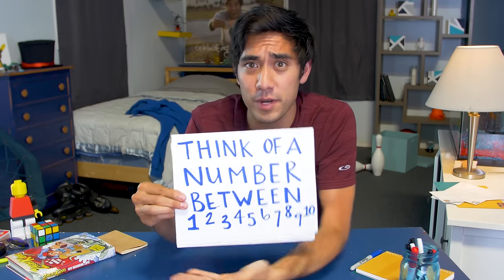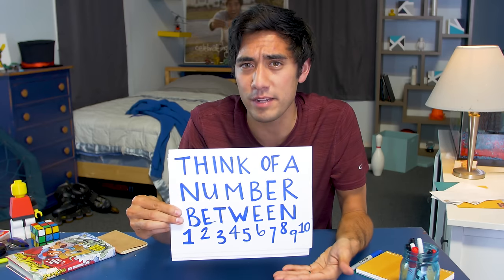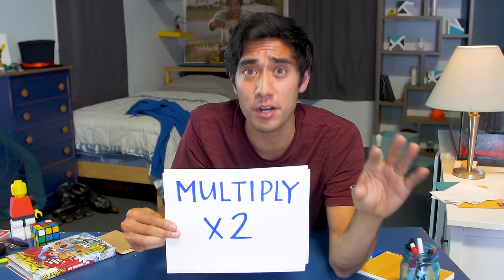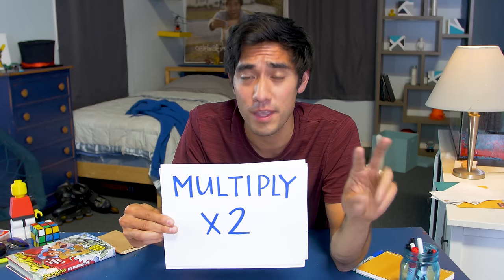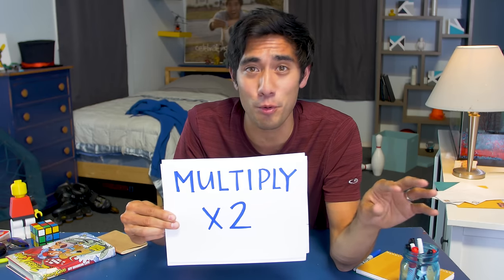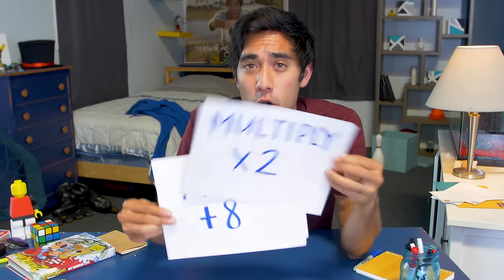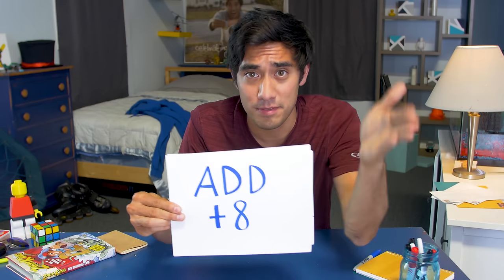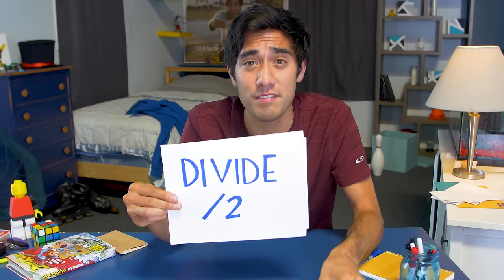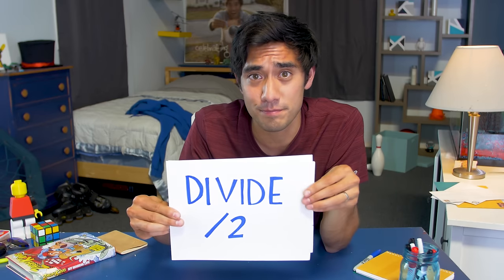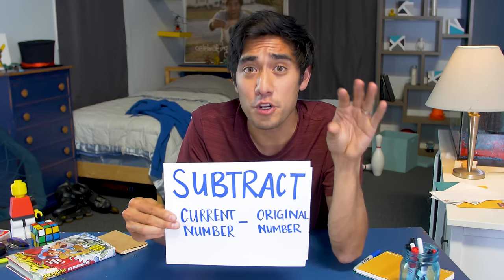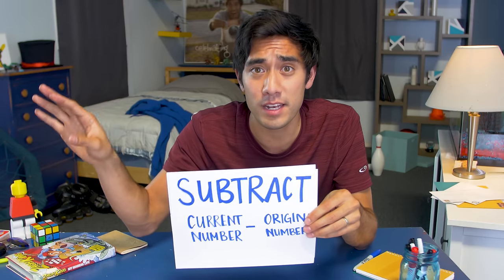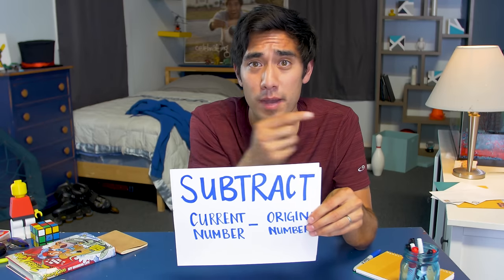The first trick: think of a number between 1 and 10. Got the number? Good. Multiply that number times 2 — if you need your phone calculator, that's totally fine. Add 8 to that number. Now divide by 2. Now take your current number and subtract the original number you thought of, the 1-through-10 number.